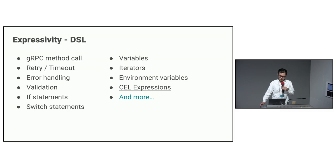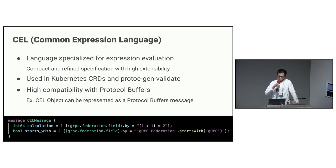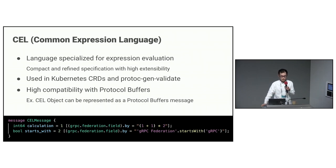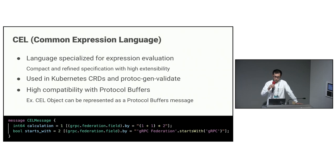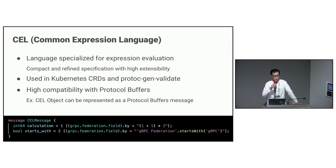One of the key features of the DSL is the CEL expression. CEL is a language created by Google designed specifically for evaluating expressions — the specification is concise and well-defined, and it can be easily extended. It has already been successfully used in various projects such as Kubernetes CLDs and Protogen Validate. It also offers high compatibility with protocol buffers; for instance, a CEL object can be represented as a protocol buffers message. The lines below briefly describe how to use CEL in zRPC Federation — the first line performs a simple calculation, and the second line uses the startsWith method, both binding the results to the corresponding field.